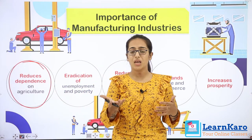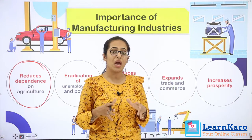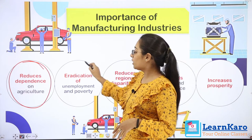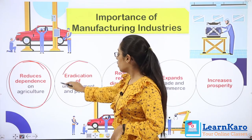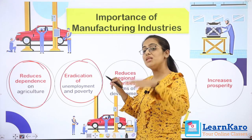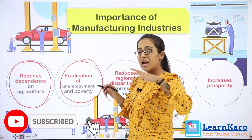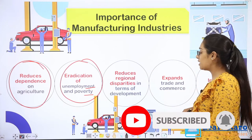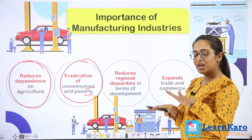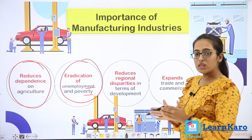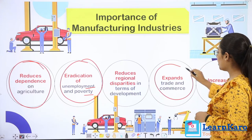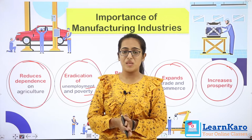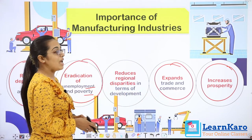Eradication of unemployment and poverty — industries generate employment for laborers, owners, and entrepreneurs, thus eradicating unemployment and reducing poverty. Eradication means to reduce. That is a very basic cause of our country's backwardness. Manufacturing also reduces regional disparities — the gap between rich and poor. Income expands, trade and commerce increase, business grows, and prosperity in our country develops. These are the basic importance of manufacturing industries.